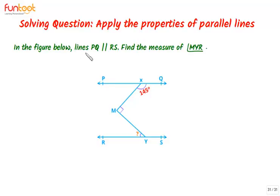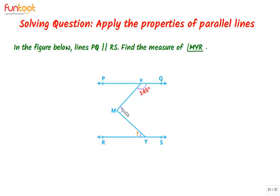In the figure given below, lines PQ is parallel to RS. Find the measure of angle MYR. In this question, lines PQ and RS are parallel. The measure of angle MXQ is given as 145 degrees, angle XMY is given as a right angle, and we have to find the measure of angle MYR.